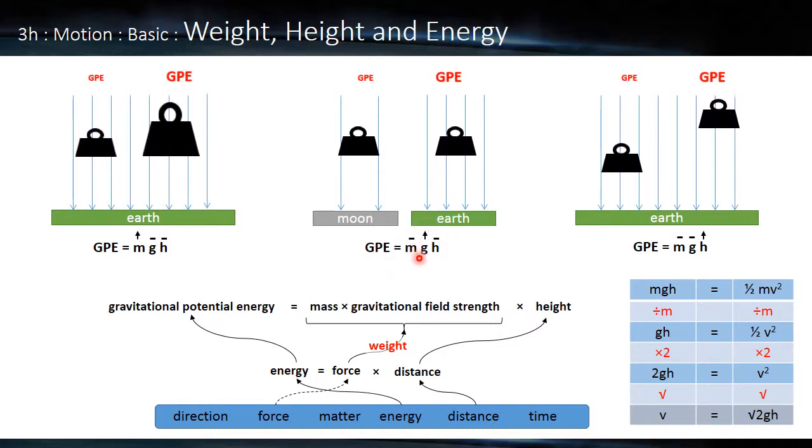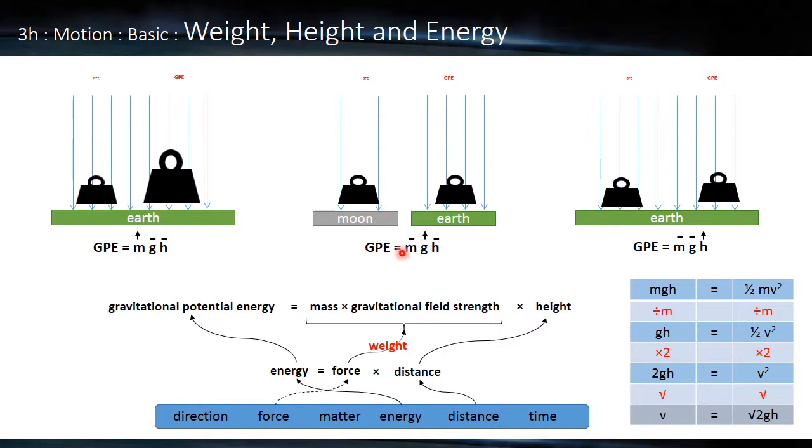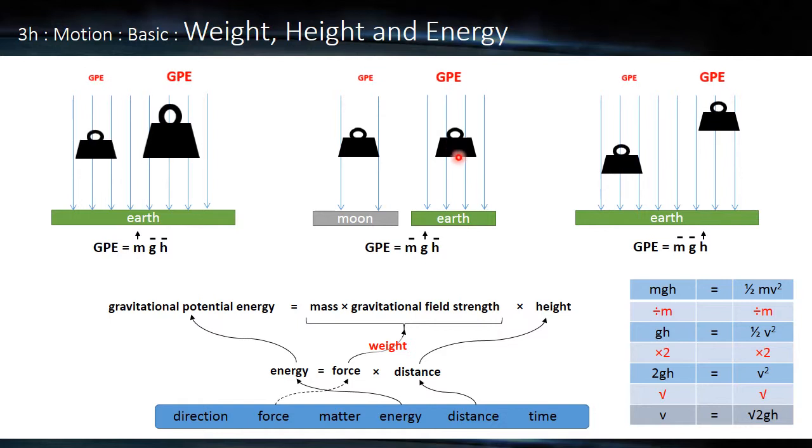Harder to demonstrate in the lab is changing gravitational field, but if we could go to the moon and then to the earth, kept everything else the same, the mass and height, we'd have a similar effect. The greater strength of the earth means it would require more energy to lift the same mass to the same height. And again, we can see the GPE rising there.